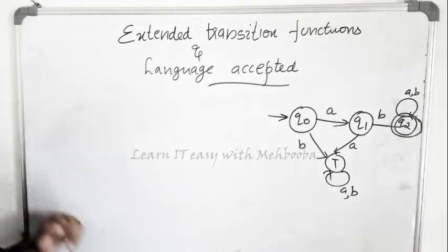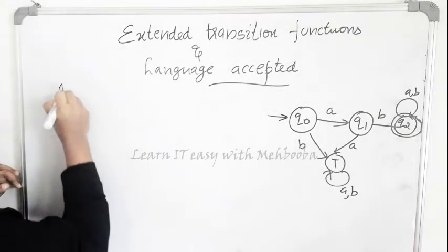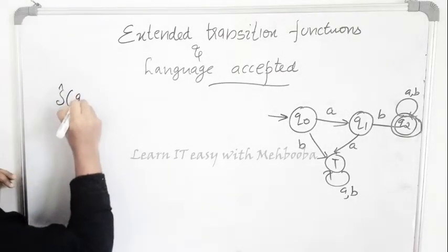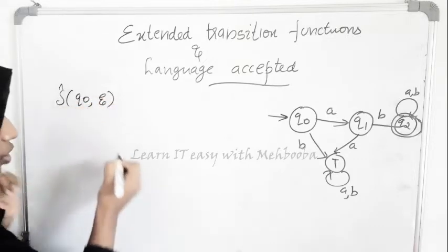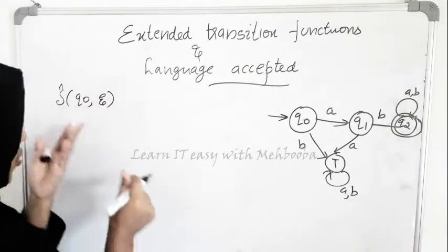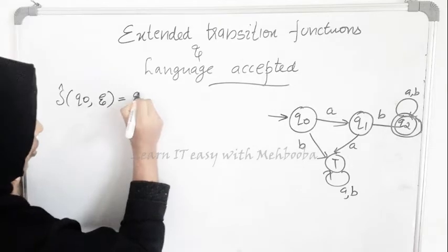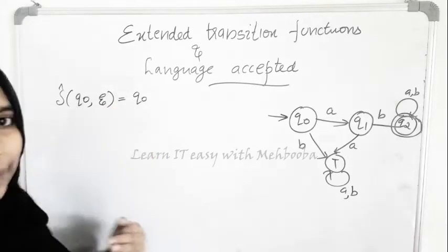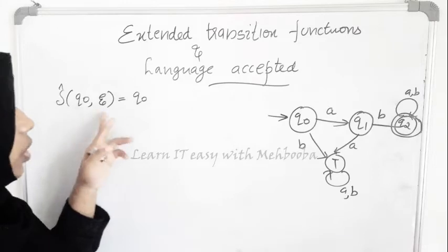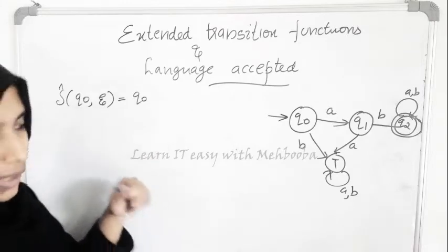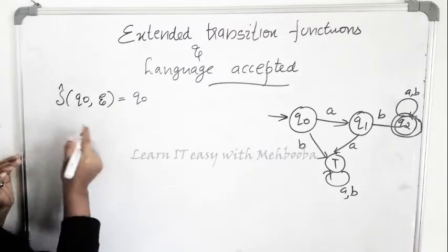One result you need to know is: delta-cap(q0, epsilon) = q0 itself. Epsilon is an empty string, and it is also a string. If you apply epsilon to any state in a DFA using delta-cap, you will get that state itself.